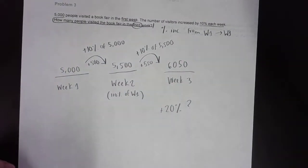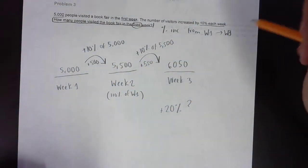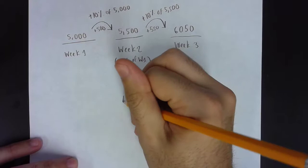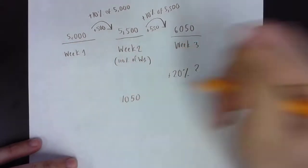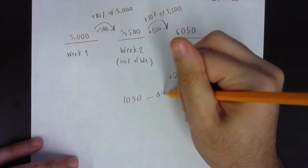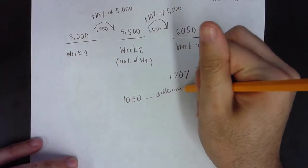Right? And we're going to double check that because the difference between week one and week three were 1,050 visitors. That 1,050, again, is the difference.